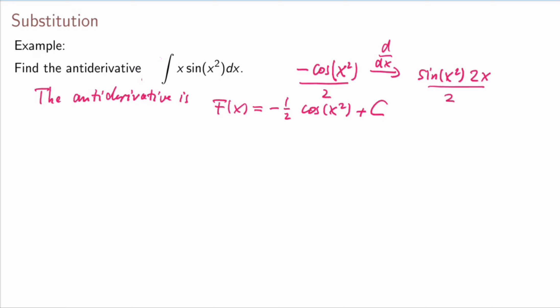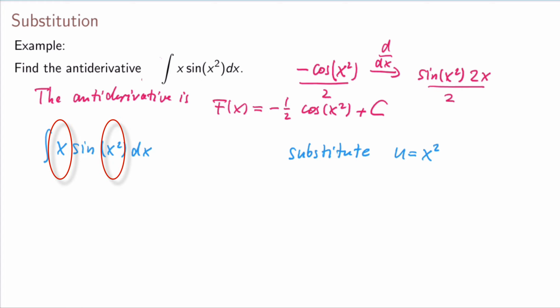There is a smarter way to do this, called the substitution rule or simply substitution. Starting with the original integral of x·sin(x²) dx, the idea is to undo the chain rule. The factor x came from the chain rule, and the inner function here is x², so we substitute u for x².